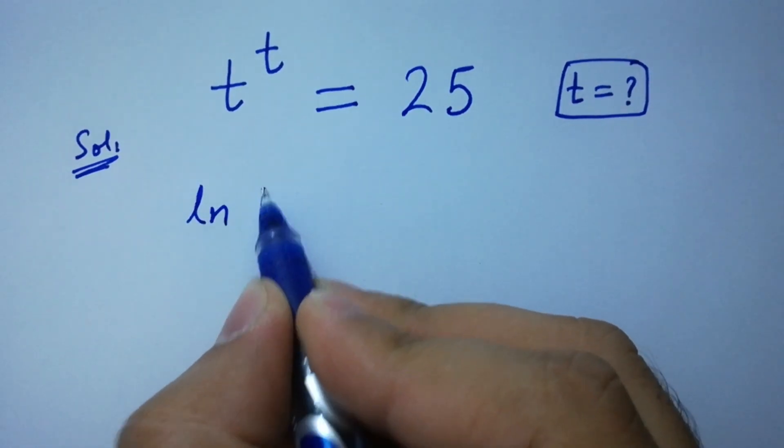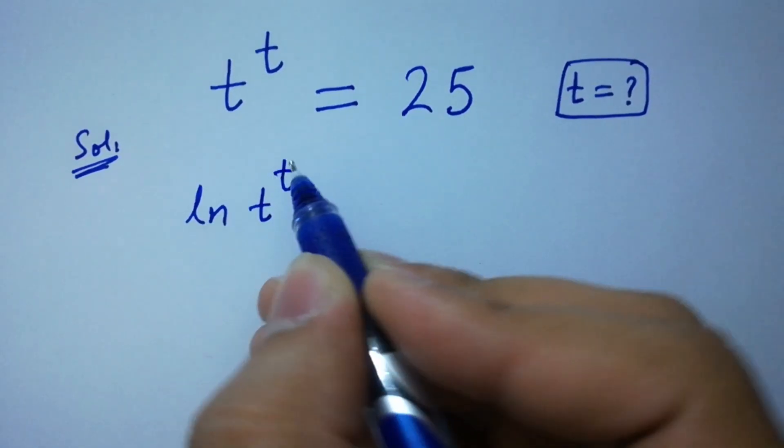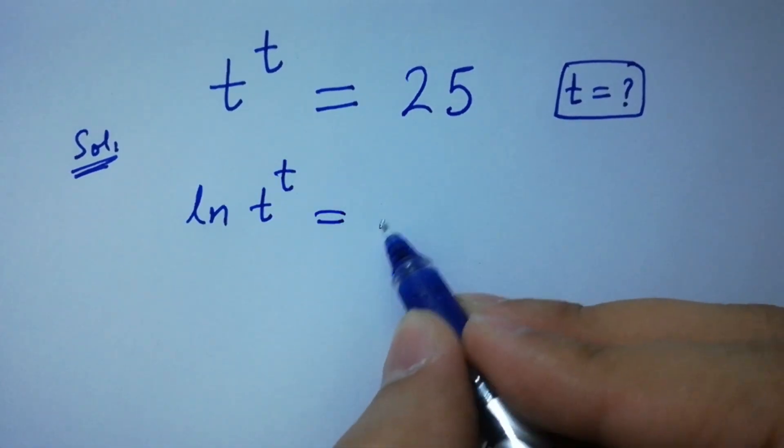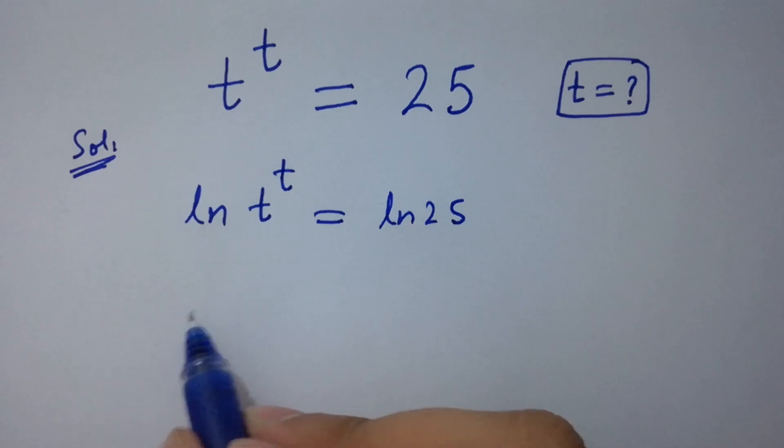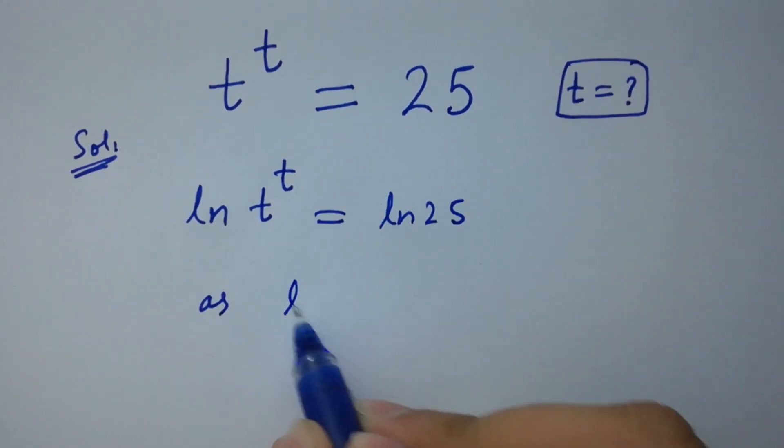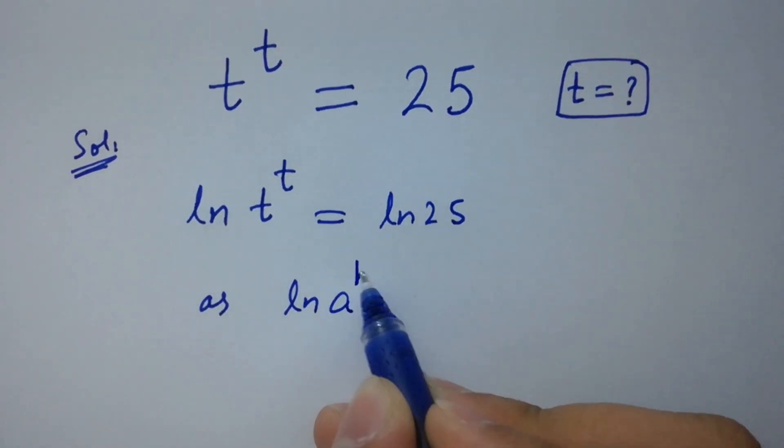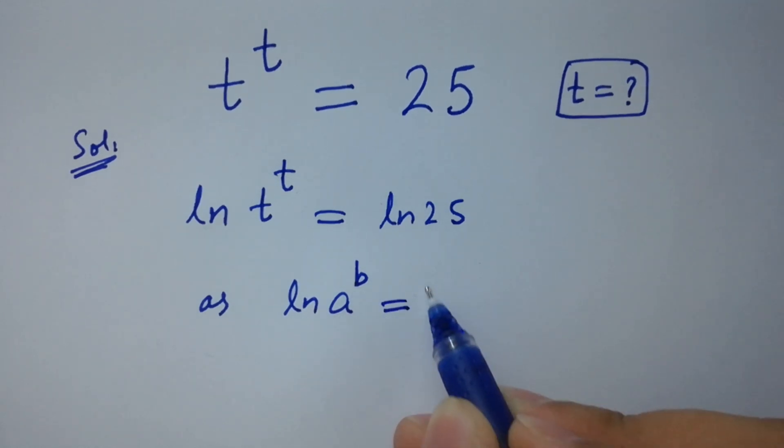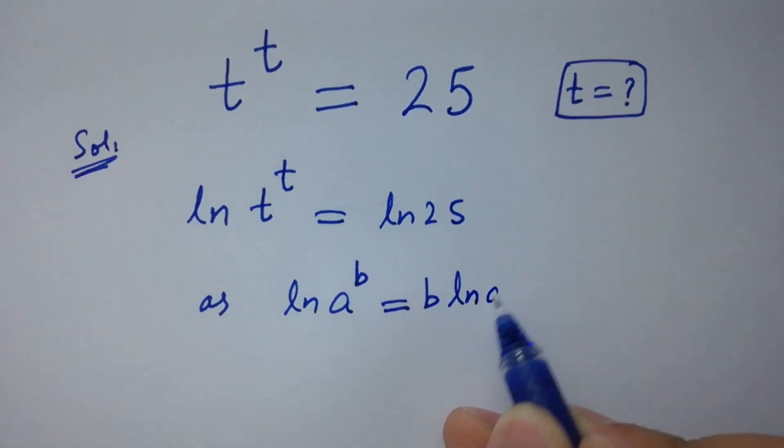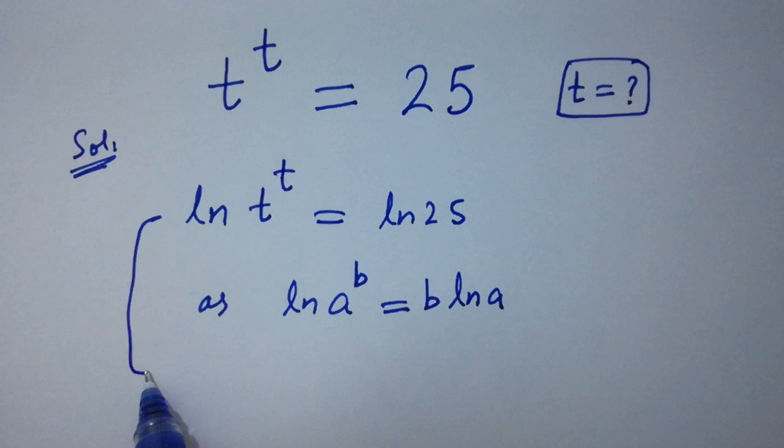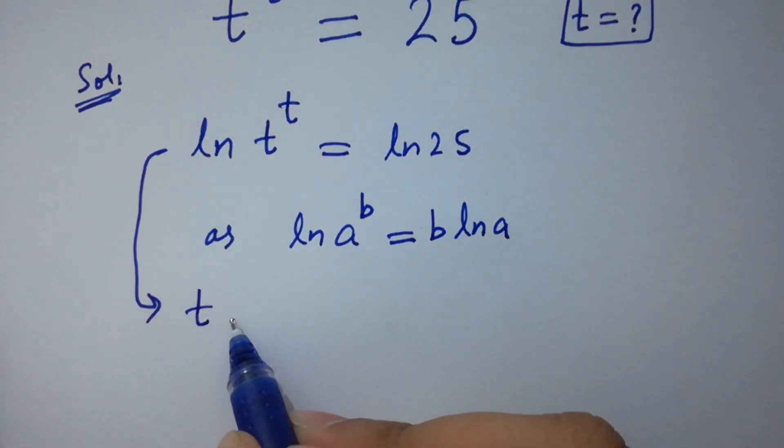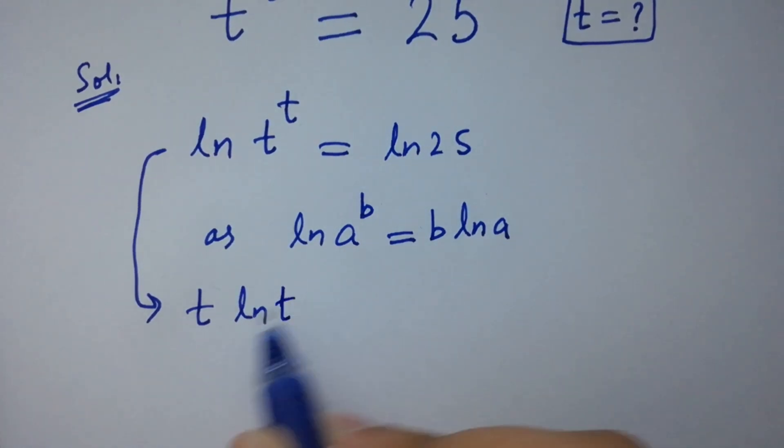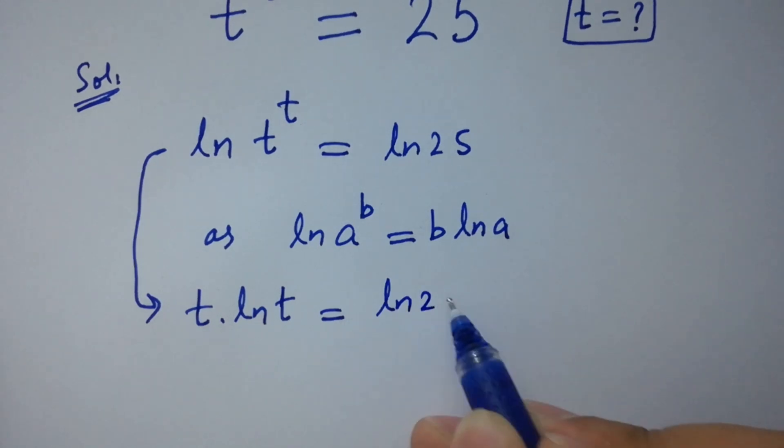ln of t to the power t equals ln 25. As ln of a to the power b equals b ln a, then it will be t ln t equals ln 25.